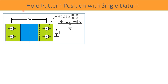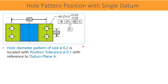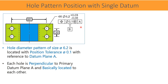Now let us compare the three-datum reference system to a single datum. In this example, we shall see how a rectangular pattern of holes can be defined using just one single datum. The drawing shows four holes each controlled by a position tolerance of 0.1 relative to datum plane A. There are no secondary or tertiary datums. The holes are located relative to each other with basic dimensions, and datum plane A only controls the orientation of the holes — specifically their perpendicularity with the plane.